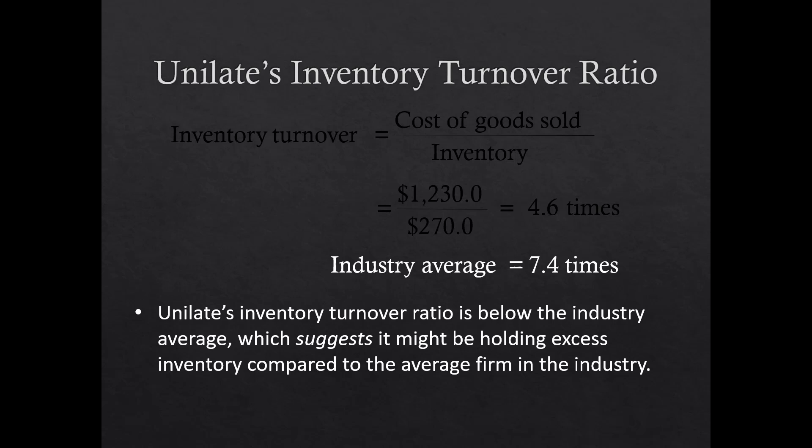The industry turns over its inventory more than every two months (7.4 times per year); Unilate is taking almost three months to turn over its inventory at 4.6 times. That's an extra 30 days of inventory sitting unsold. Unilate may be holding excess inventory relative to other firms, and you need to understand why — it might be a good reason, or it might not be.